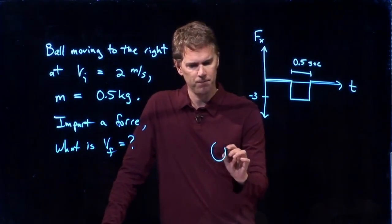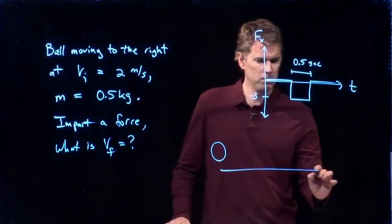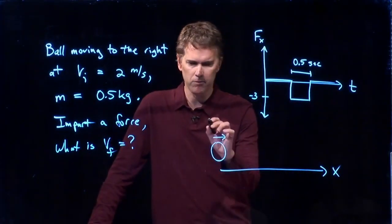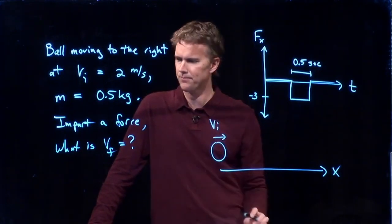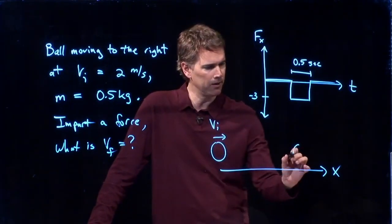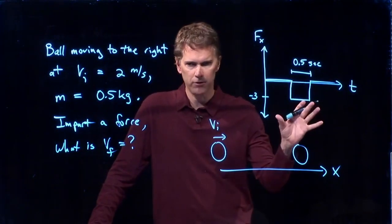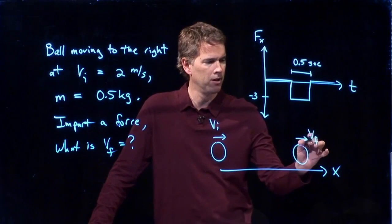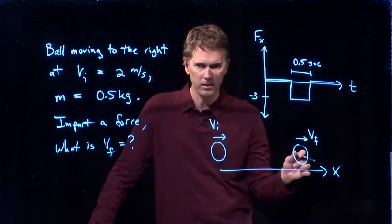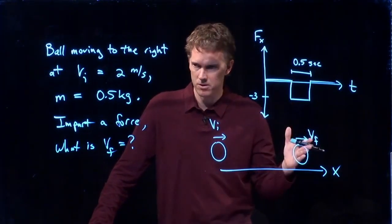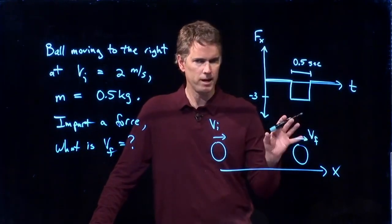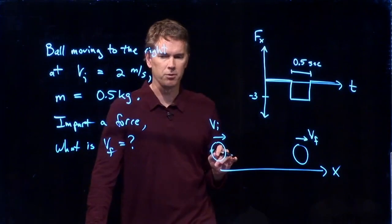So let's see if we can draw a picture of this thing. Here's our ball. It is moving to the right. We can call that the positive x direction. Initially, it has some vi. And later, after we've applied this force, it's going to have some vf. We don't know if it's to the right. We don't know if it's zero. We don't know if it's to the left. But let's just draw it to the right to start with. And we'll see if we can figure something out.